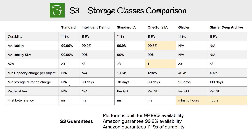And then you have the latency — that's how fast you can access files. You can see 'ms' means milliseconds, so for all these tiers it's super fast. AWS does give a guarantee of 99.99% availability and a guarantee of 11 nines durability. So there you go — that is the big comparison.